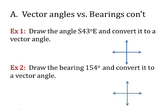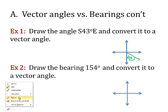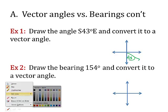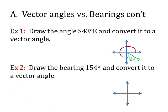So draw angle south 43 degrees east. Let's try another one. This is 43. Convert it to a vector angle. So let's go back to the other one. Vector angle has to start here and go all the way up. Well, I know this is 270, so all I have to do is take 270 plus 43, and that's my new vector angle. So 313 degrees.